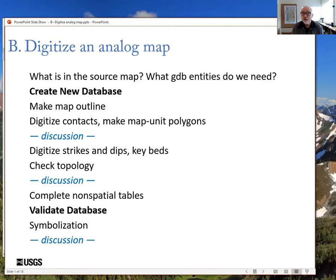We'll do this in steps with breaks for discussion between each step. We'll start by assessing the source map, figuring out what we need, making an empty database, putting a map outline — a box to draw inside of — and begin digitizing contacts and making map unit polygons.